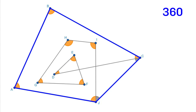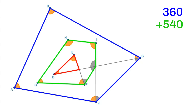Next, we will add another auxiliary line from vertex F to the intersection. This gives us a green five-sided polygon. If we include the three gray angles, we know that this green polygon has internal angles of 540 degrees. Finally, we look at the red triangle in the middle. If we include its gray angle, we know that its internal angles sum up to 180 degrees.